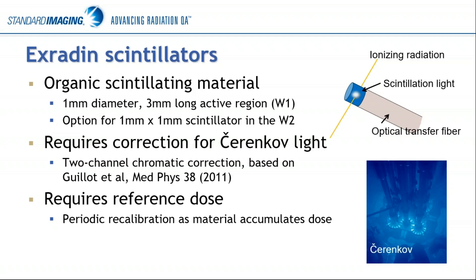This correction allows us to do a couple of characterization measurements, which I'll talk about next, and use the correction factor we get from those characterization measurements to remove that stem effect. These are not absolute dosimeters — you do have to give them a reference dose if you want output in terms of dose, and periodically recalibrate them as the plastic accumulates dose. Just like your PMMA phantoms, the optical transfer fiber will yellow a little bit with radiation and with age, and that changes how it transmits the spectrum.